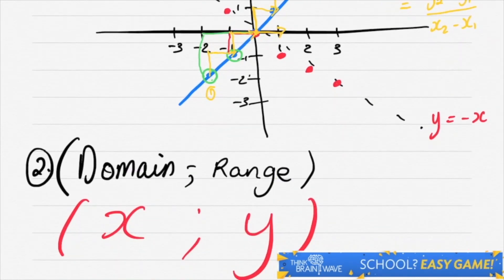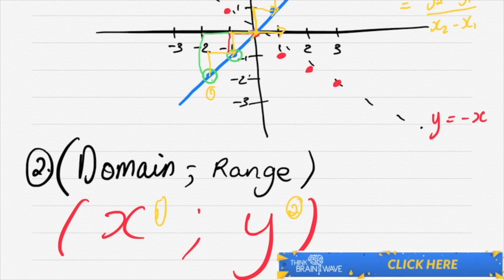If we are asked for the domain and range, domain always comes first, range comes second. It's the same as x comes first and y comes second. So if you get these terms, you know that this is an x and this is a y.